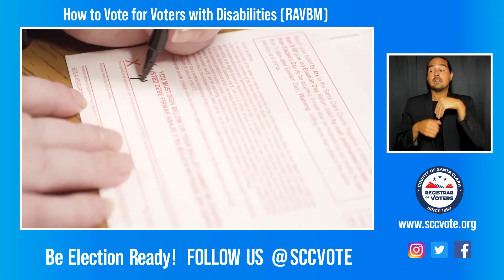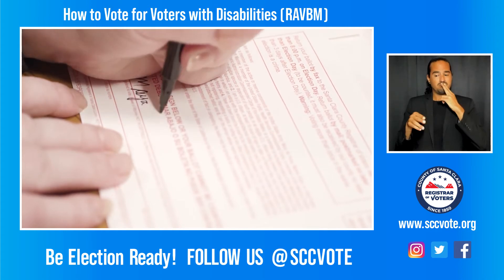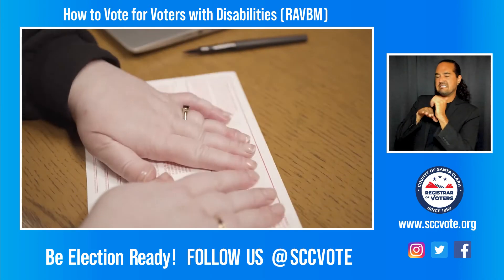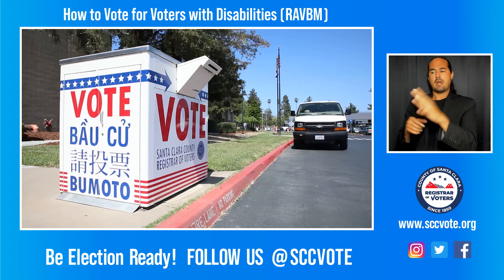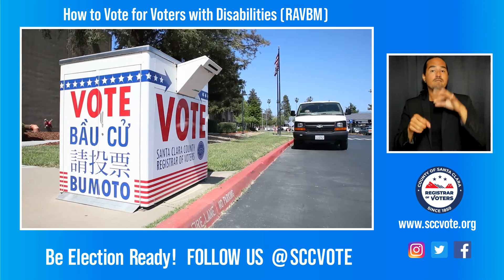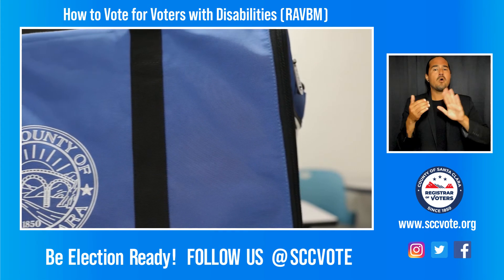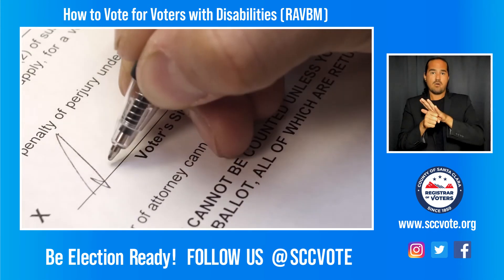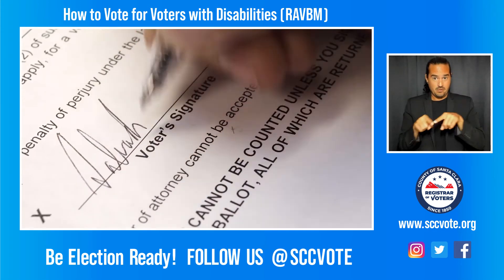There are three ways a Remote Access Vote-by-Mail voter may return their ballot: with the provided postage paid return envelope via standard mail, by dropping their ballot in an official ballot dropbox, or by returning it to any vote center in the county. All return ballots must have a printed and signed voter form enclosed with their ballot.